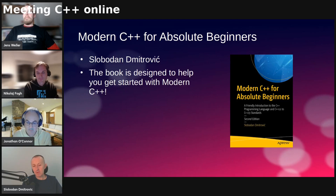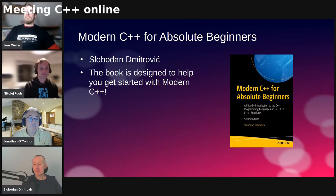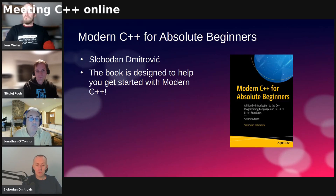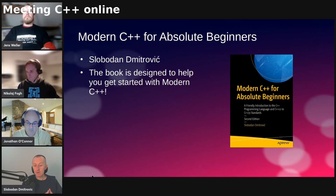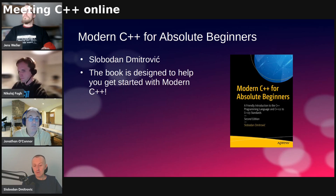My book is an introductory course to the C++ programming language, the C++ standard library, and Modern C++ standards. In the second edition, I've included notable features starting from C++11, C++14, C++17, and C++23 as well. My idea with this book was to provide an introductory course that aims to explain complex things in an easy-to-understand manner while not sacrificing the amount of info you should be introduced to when working as C++ developers.